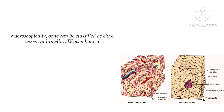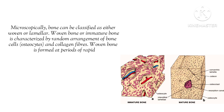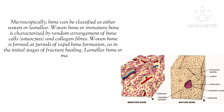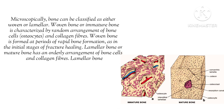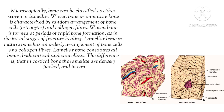Now looking at bone microscopically, we can classify bone as woven or lamellar — simply put, immature and mature. Woven bones are immature; bone cells, osteocytes, and collagen fibers are randomly arranged. Woven bone is seen during rapid bone formation — in fetal life and in the initial stages of fracture healing.